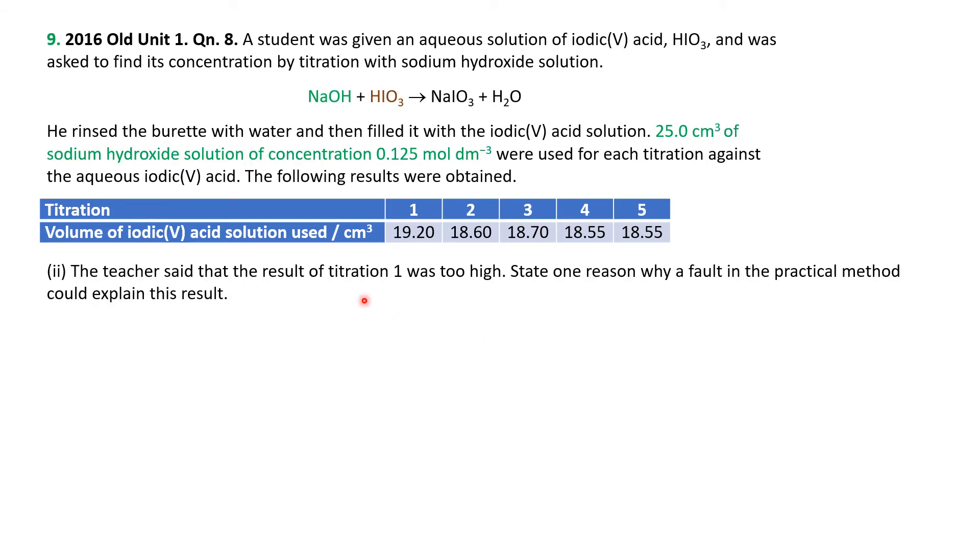Now the result of titration 1 was too high, and certainly you can look through and you can see 19.2 is significantly different than the 18.6, 18.7, 18.55, and 18.55. One reason why a fault in the practical method could explain this result. In other words, the volume is too much. The assumption is that the student put in too much liquid, giving us this very high result.